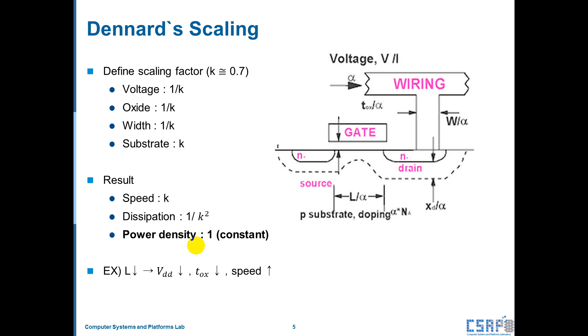While more transistors are integrated, the power density is still remained. So we can consider only scaling factor for development of chip. For example, if we try to reduce the gate length, we can also decrease the drain voltage and thickness of oxide, and then we can also increase the speed of transistor.